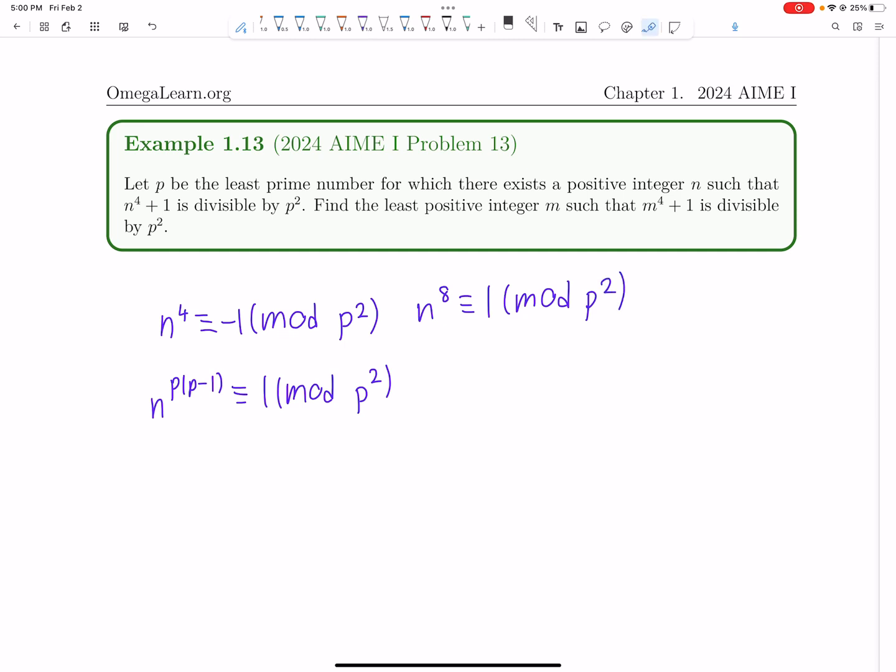So if this thing is 1 mod p squared, then we must have that 8 divides p times p minus 1. Now, because 8 is like the least kind of power, this is a theory of orders, 8 is the order of n mod p squared.